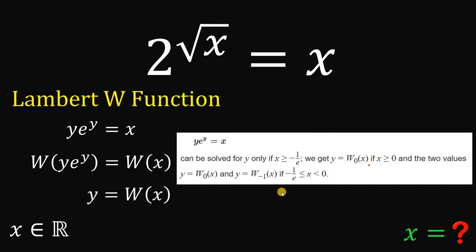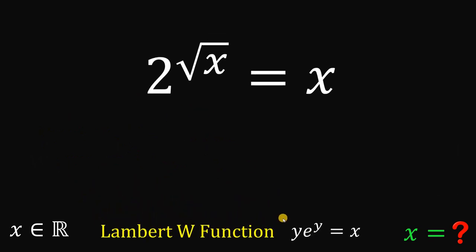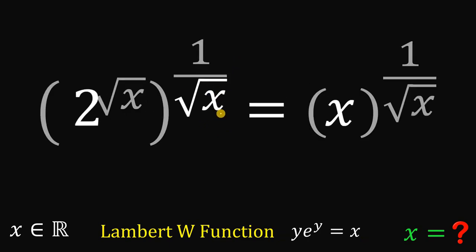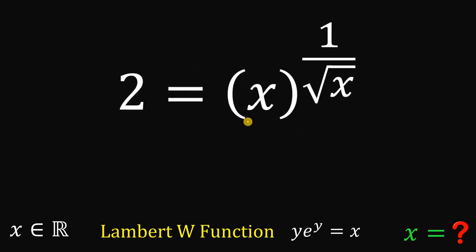Now let's apply this. We need to rewrite the equation 2^(√x) = x in the form y·e^y = x. To do that, let's raise both sides to the power of 1 over √x. This cancels out the square root of x on the left, giving us 2 on the left-hand side and x raised to the power of 1 over √x on the right.